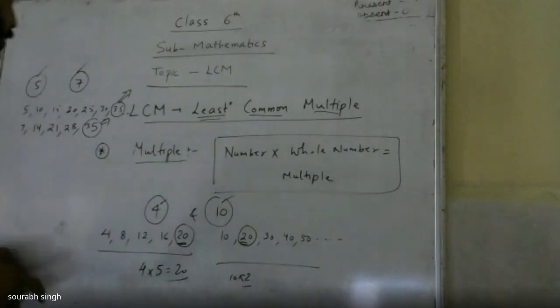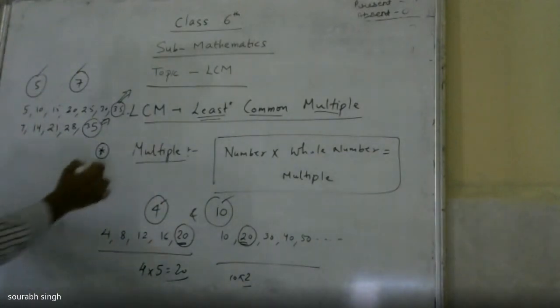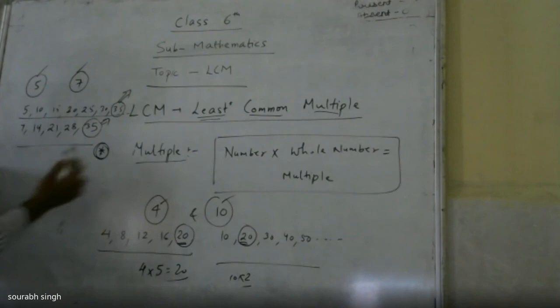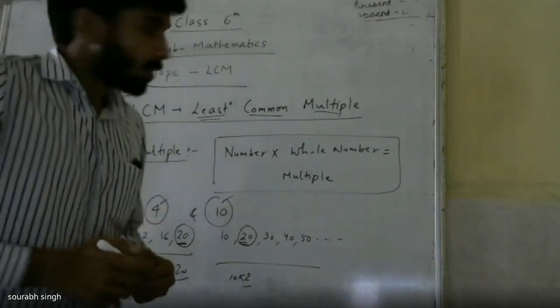One important thing to note is that you have to write the multiples of both numbers and then find out the common multiples between the two. There is another method, the prime factorization method of finding LCM. We will discuss it in the next video or next class. Thank you.